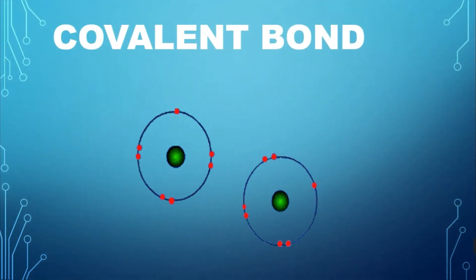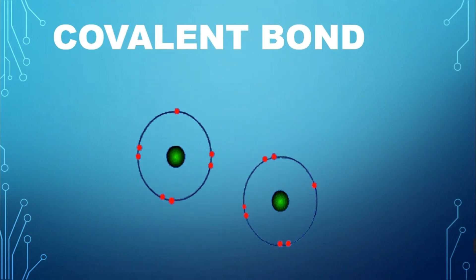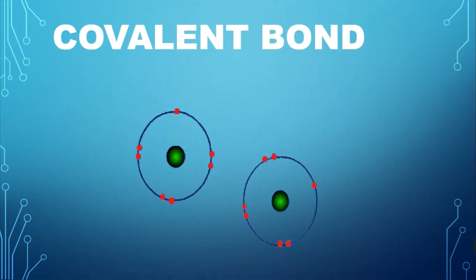If the interaction is realized by only sharing electrons between two atoms, it is called a covalent bond, such as the bond between the silicon atom and the carbon atom in silicon carbide.